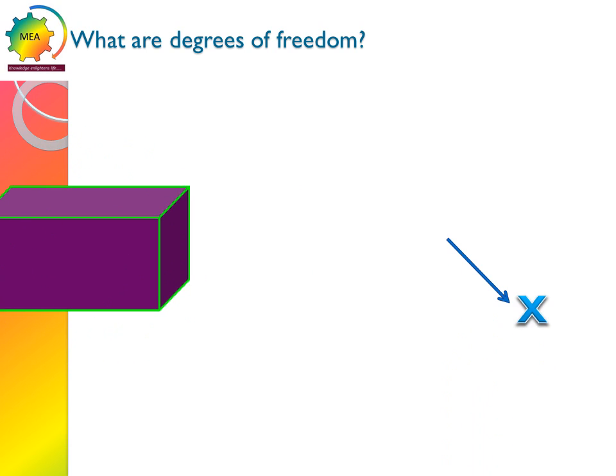That means it can have a transitional motion along x axis, along y axis and z axis. Along z axis, it is termed as w.